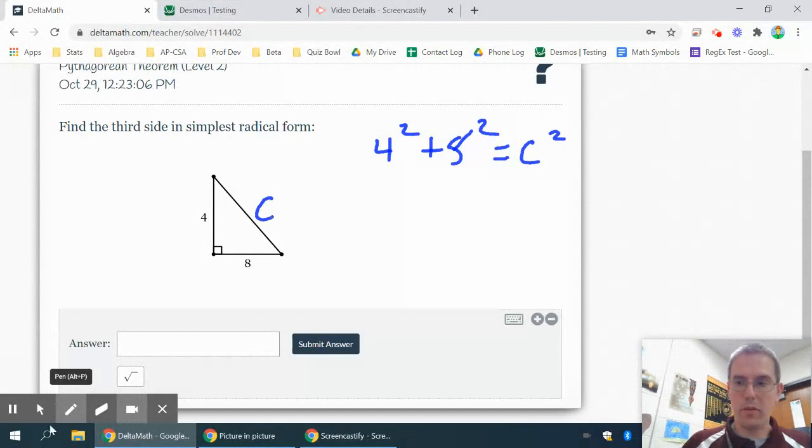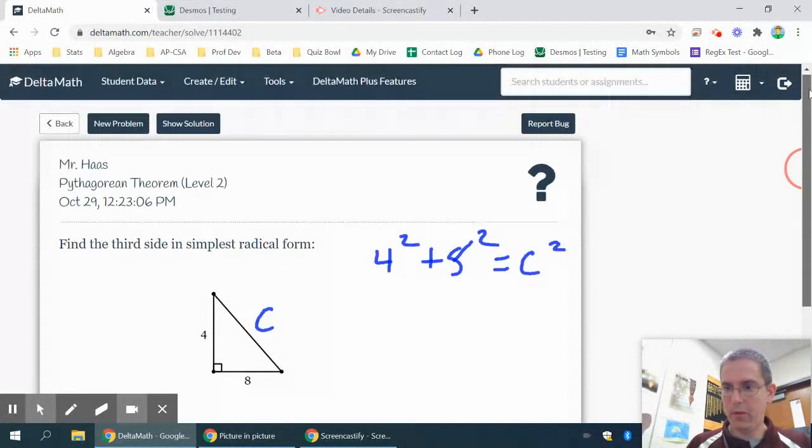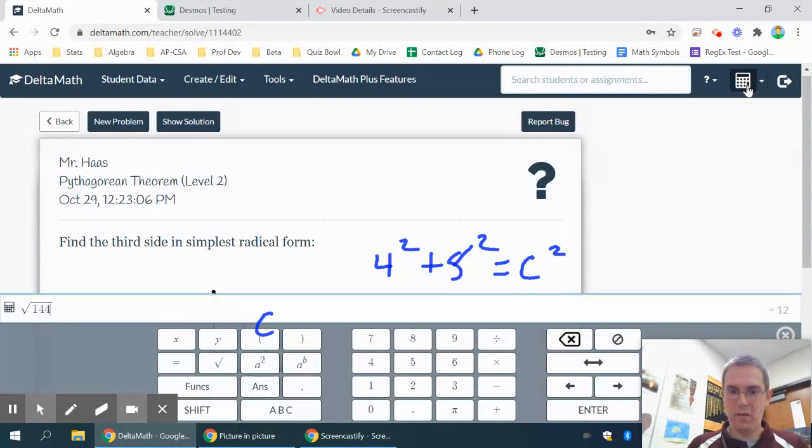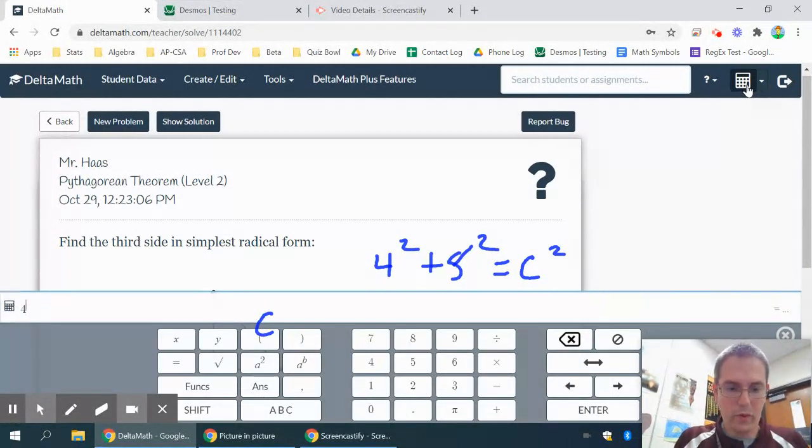And then, once again, I can just pull up my calculator that is inside Delta Math, or I can pull up Desmos if you prefer. They work about the same. In this case, I have 4 squared plus 8 squared.